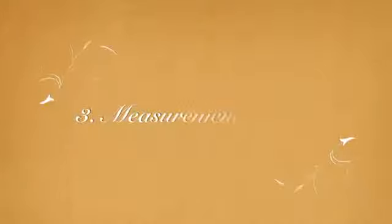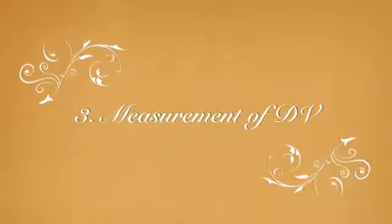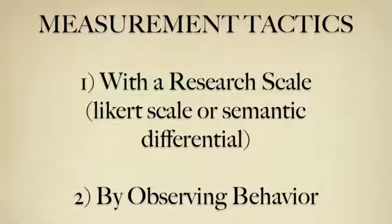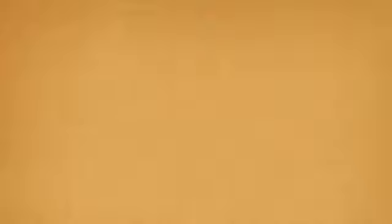The third part of an experiment is the measurement of the dependent variable. There are two types of tactics one can use. The first technique is to use a type of research scale, either a Likert scale or semantic differential. The second technique is to simply observe the behavior of the participant.